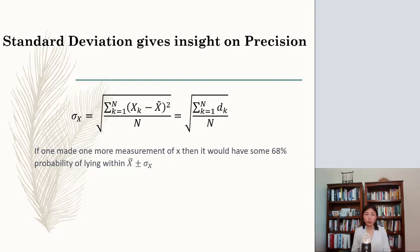That has something to do with standard deviation, which gives insight on precision. It tells you how scattered all your data are. Its expression is the square root of the sum of the difference between individual data and the mean value squared, divided by number of trials. So if one made one more measurement data x, then it would have some 68% probability of lying within the average value plus minus standard deviation.